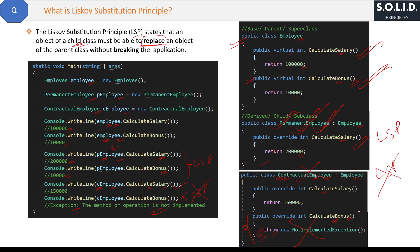A derived class can override base methods, and that is completely fine. But if those methods are not overridden, all base class methods must be applicable for the derived class — that should be the ideal design approach as per LSP. In our example, all Employee class methods are applicable for PermanentEmployee, so it follows LSP. But for ContractualEmployee the design is not good, which is why we are violating LSP. To correct this design, we should remove calculateBonus from the Employee base class and put it somewhere else — some other abstract class, interface, or a different design — but we should not do it the way we did.